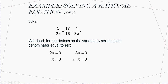The first thing we're going to do is check for restrictions on the variable by setting each denominator equal to 0. What this restriction tells us is: whenever you plug 0 in here — take 2X set it equal to 0, take 3X set it equal to 0 — whenever X is equal to 0, this cannot be a solution to this equation. That's really important.